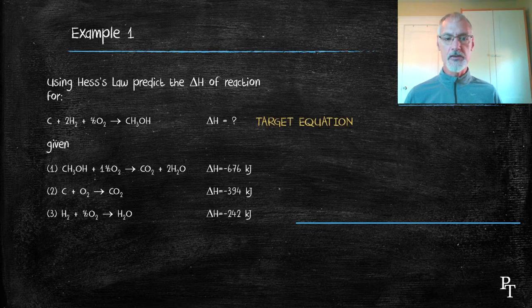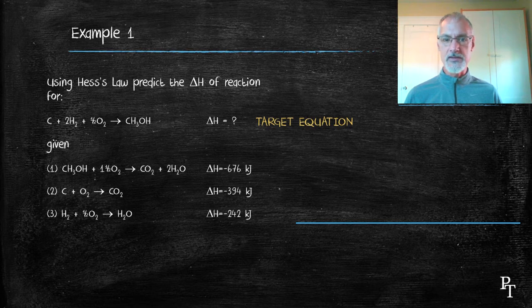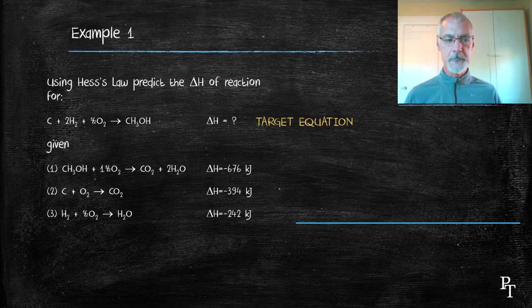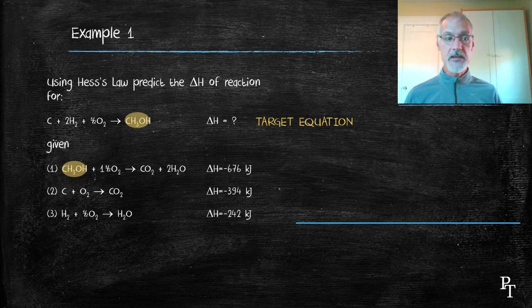I'm given three other reactions or three other experiments that have been taking place with their associated enthalpy changes. This first equation I call the target equation. This is what I want to finish up with when I add all my equations together. So let's begin by looking at equation number one. The first thing I notice here is the presence of methanol in both of them.